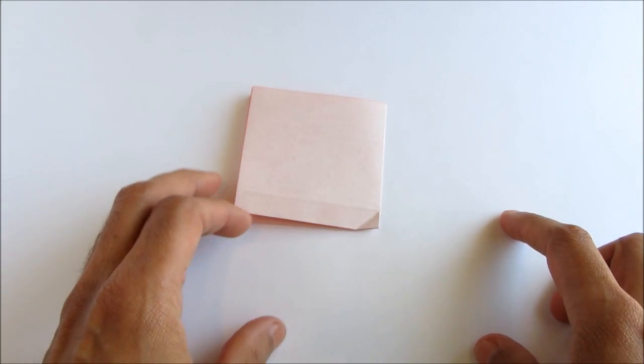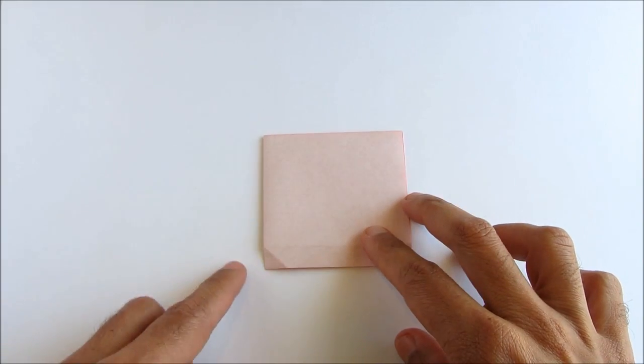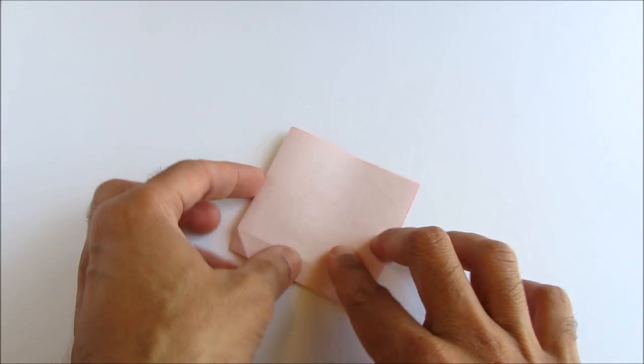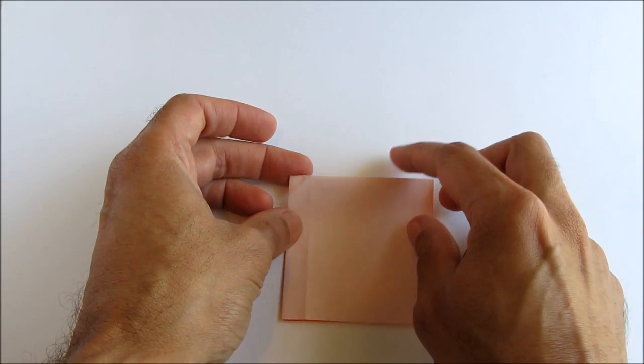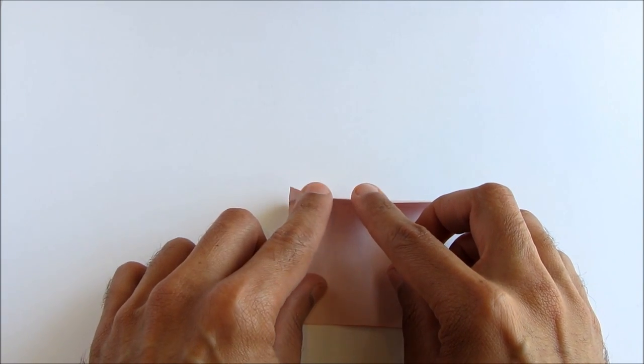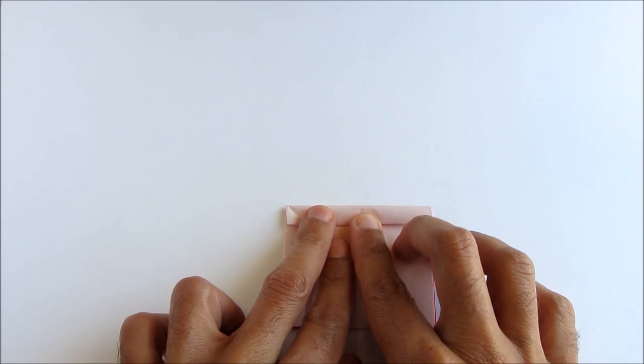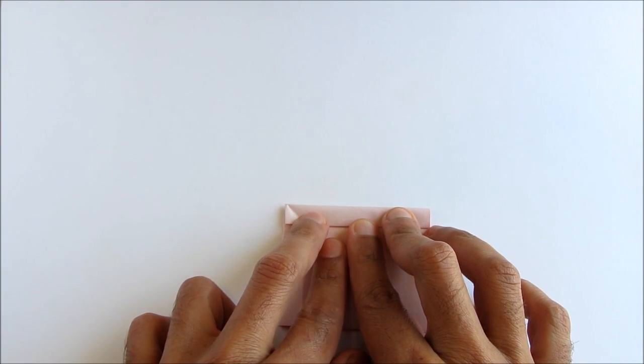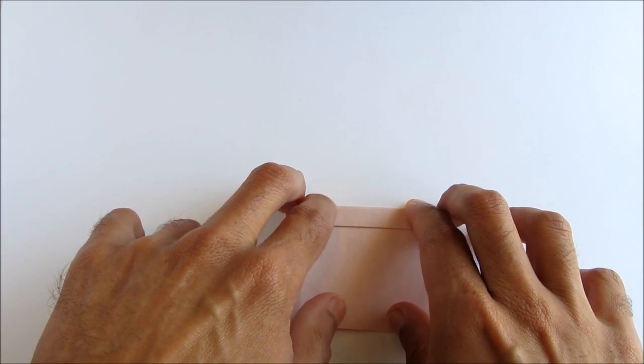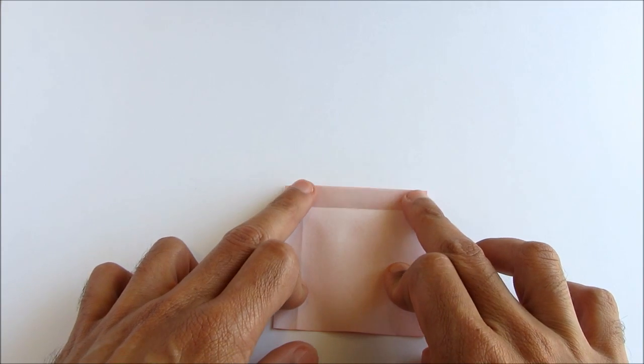Now unfold that and flip the paper over. Next, we're going to fold this left edge over to the right. That will just be the width of that corner. So fold that over, crease well, then unfold.